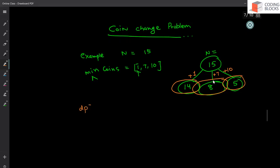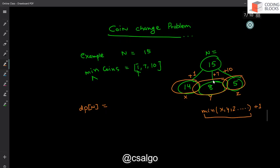dp[n] is going to be the minimum of all those subproblem answers. Let's say it takes x coins, y coins, and z coins — your answer is the minimum of x, y, z plus one, because you need one more coin on top of it. We write it as: minimum for all i of dp[n - coins[i]], plus one, to get the minimum number of coins.